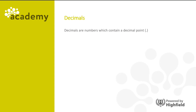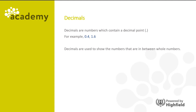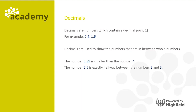Decimals are numbers which contain a decimal point, for example 0.4 and 1.6. Decimals are used to show the numbers that are in between whole numbers. The number 3.89 is smaller than the number 4. The number 2.5 is exactly halfway between the numbers 2 and 3. The number 1.256 is slightly bigger than 1.25.